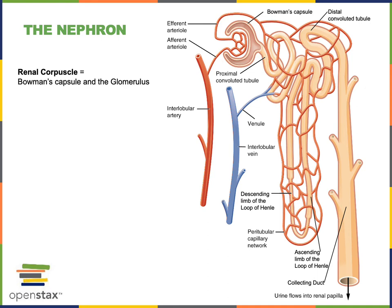Several nephrons drain into each collecting duct, and the collecting duct provides the final step of processing the filtrate to produce urine. When the fluid flows out of the collecting duct through the renal papilla, that liquid is the finished urine.